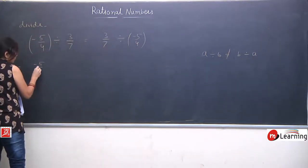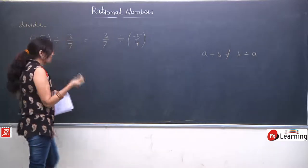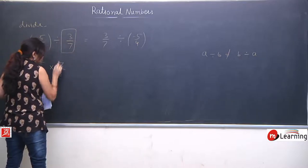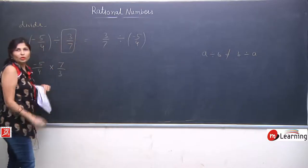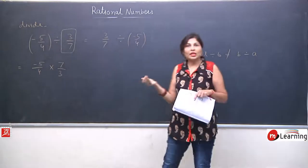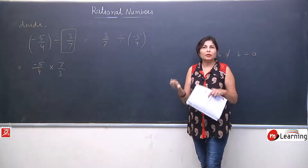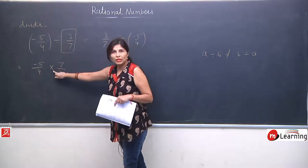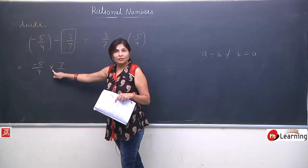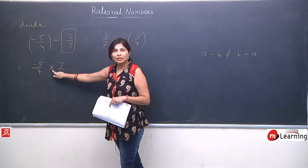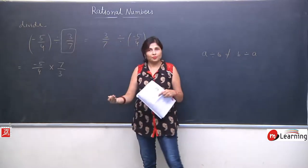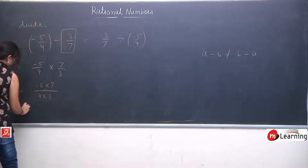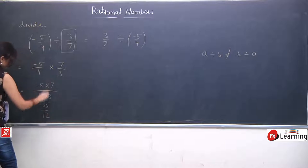There is only one way to solve division: we need to convert divide into multiplication, and after converting, the second term reciprocates — denominator aur numerator ki jagah replace karte hain. So: minus 5 into 7 upon 4 into 3 = minus 35 upon 12. This is your LHS.